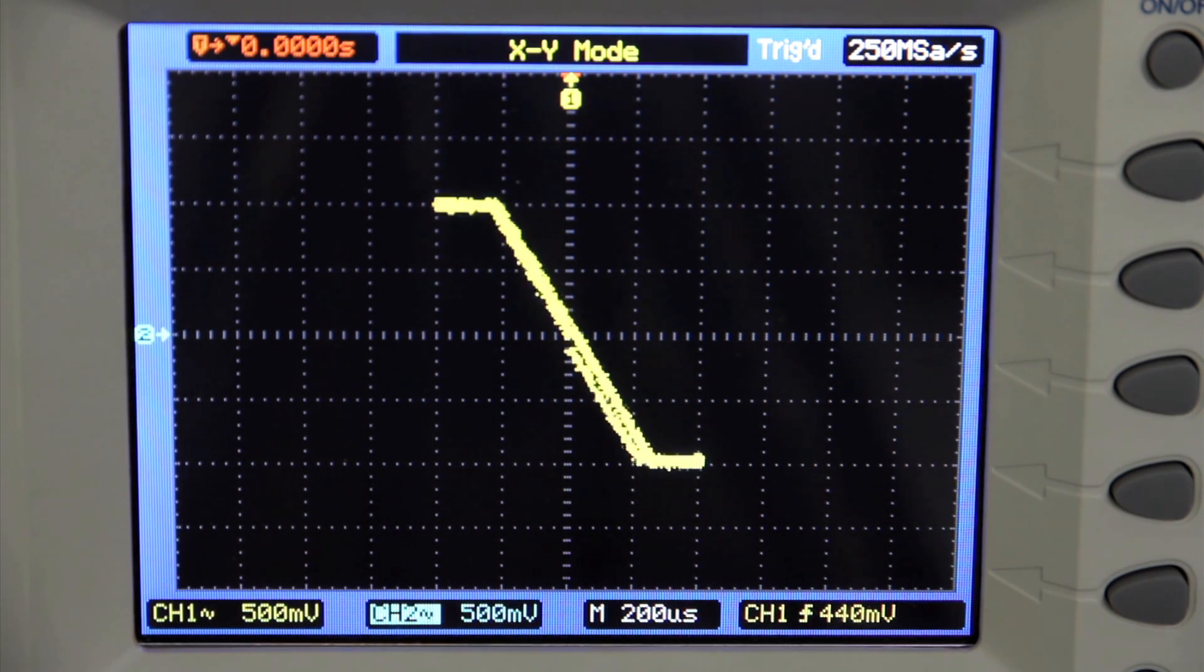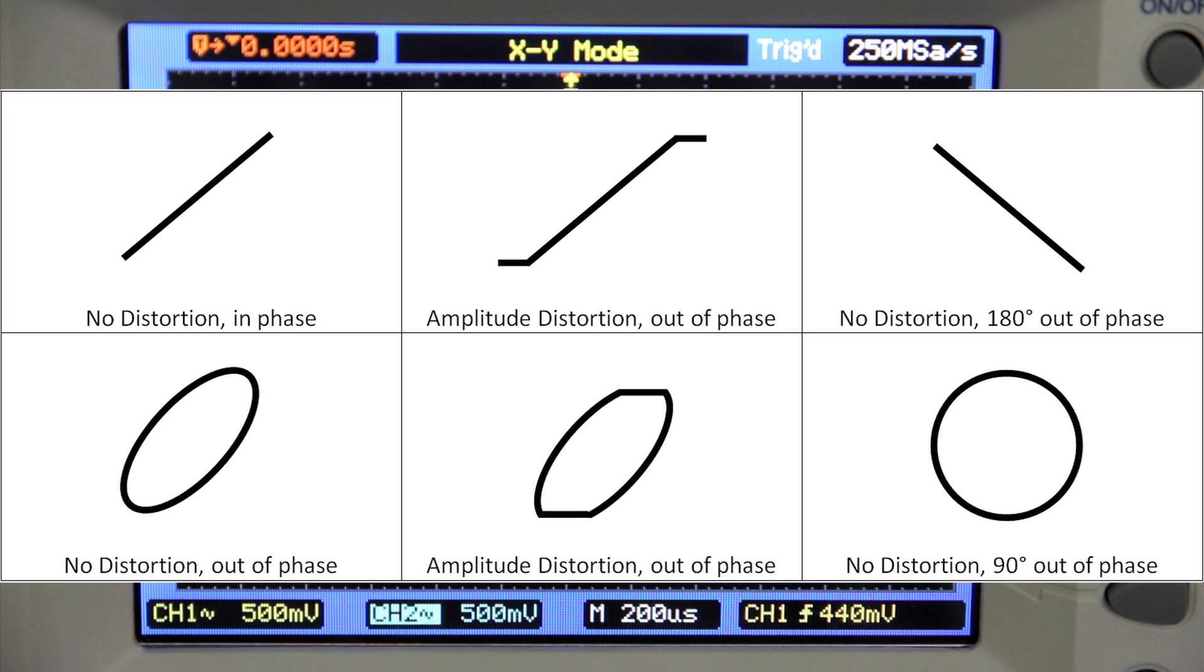Here is a table of illustrations showing different Lissajous patterns at different phase shift degrees.